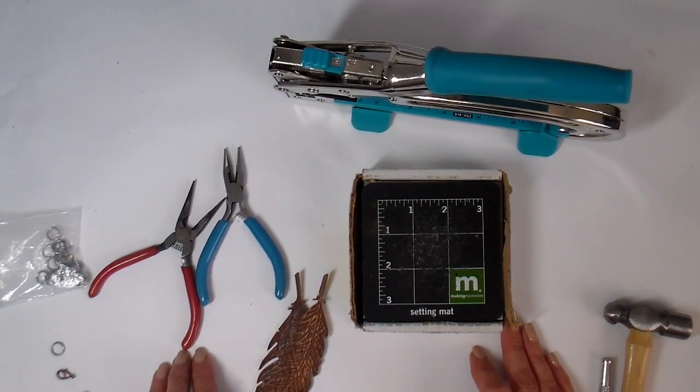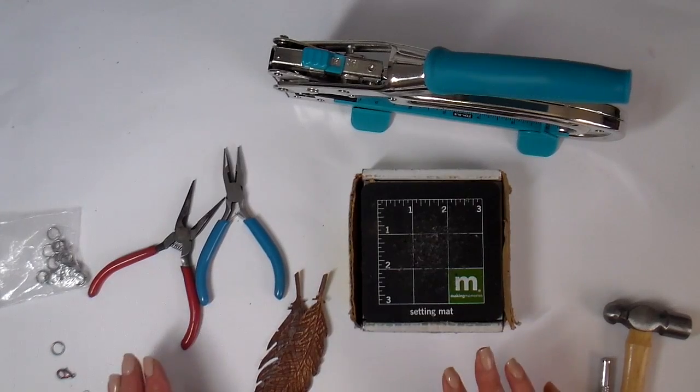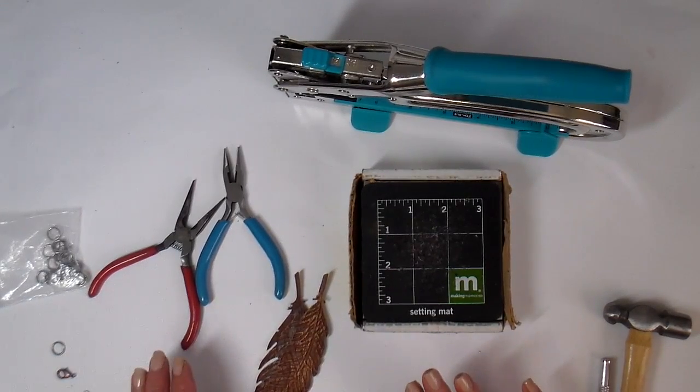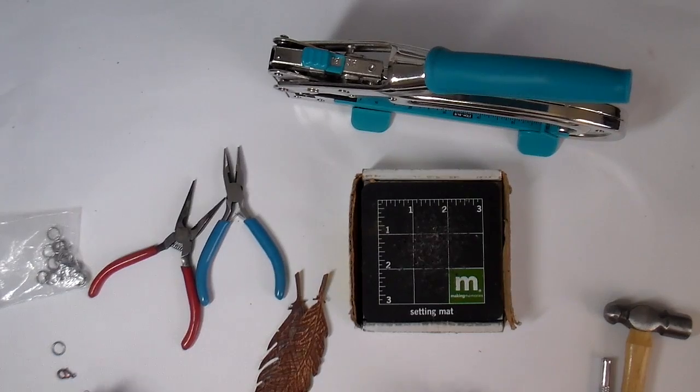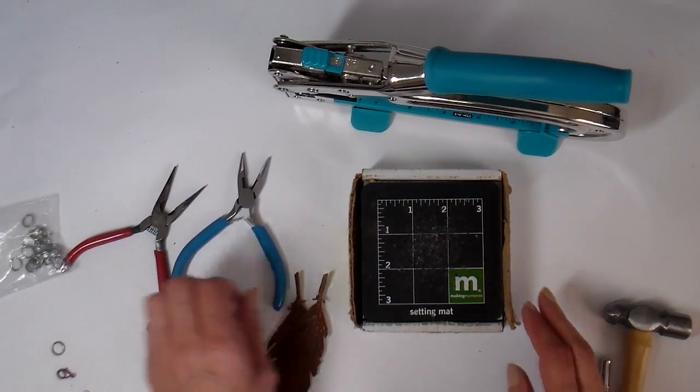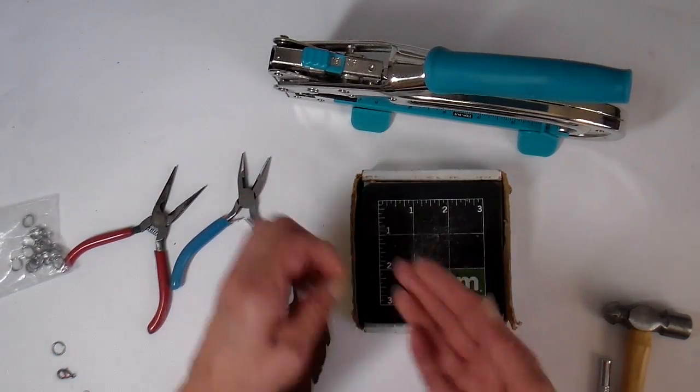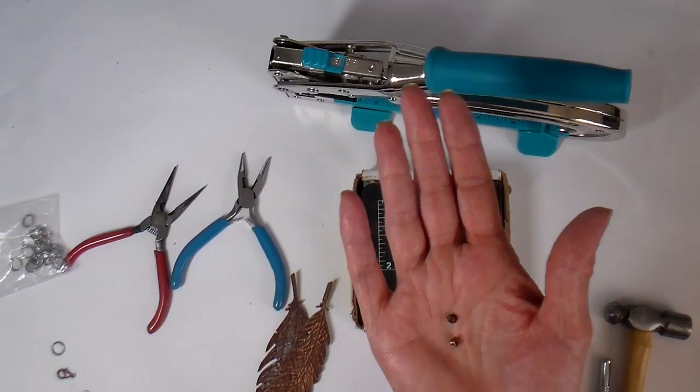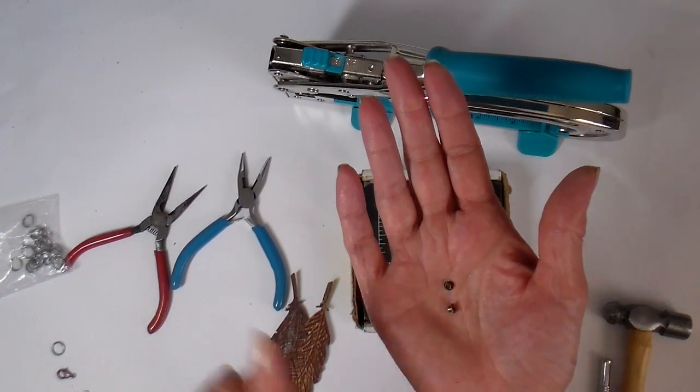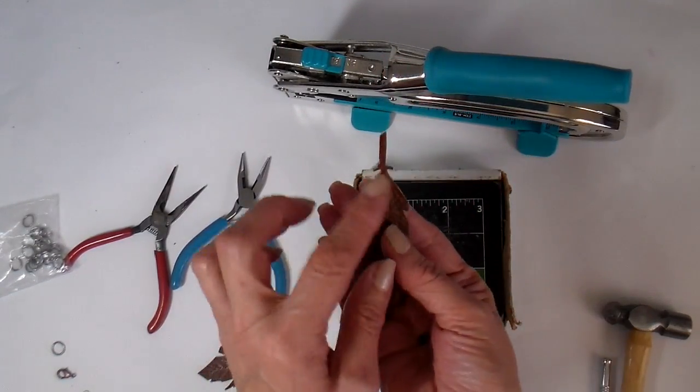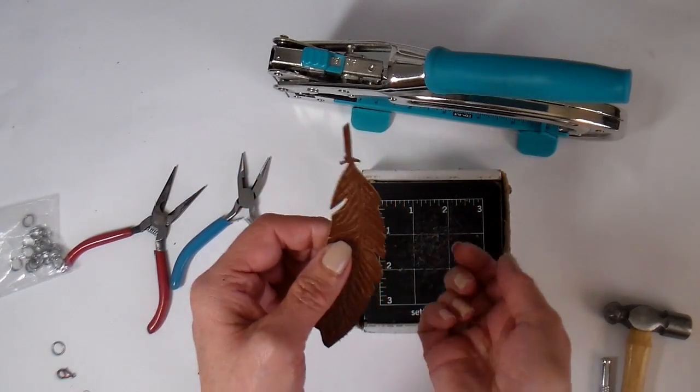This year, it's all about using up my scraps and things that I have on hand. And back in my scrapbooking days, I accumulated just a lot of little eyelets. And so this is what I'm using to basically get the hole in my little feather.